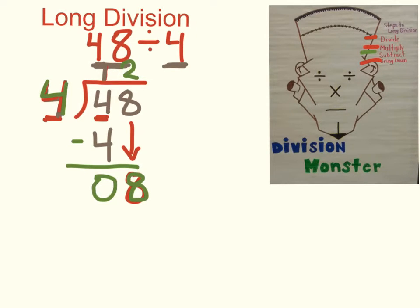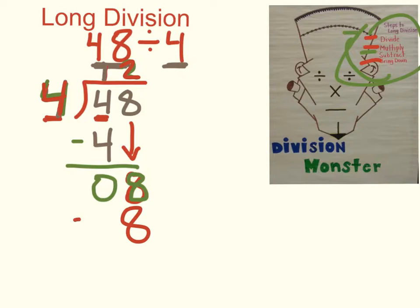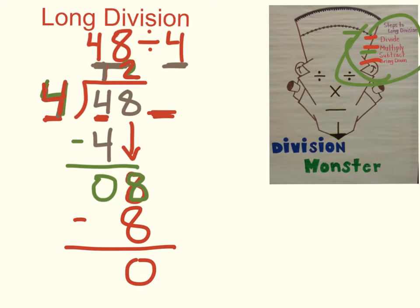I've started the process again. I divided 8 by 4 and got 2. Now I multiply: 2 times 4 is 8. Then I subtract: 8 minus 8 is 0. My answer is 12. That means 48 divided by 4 equals 12.